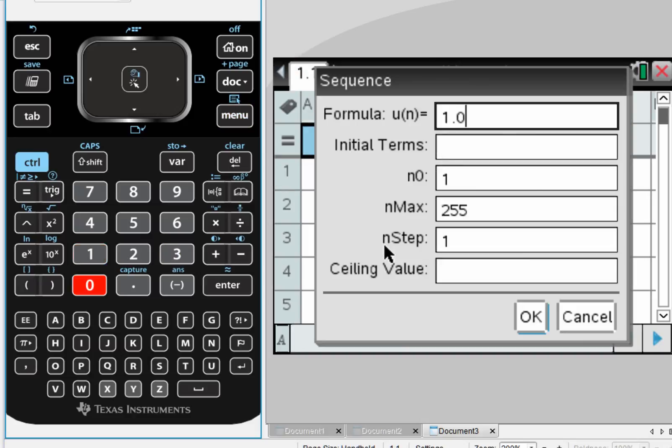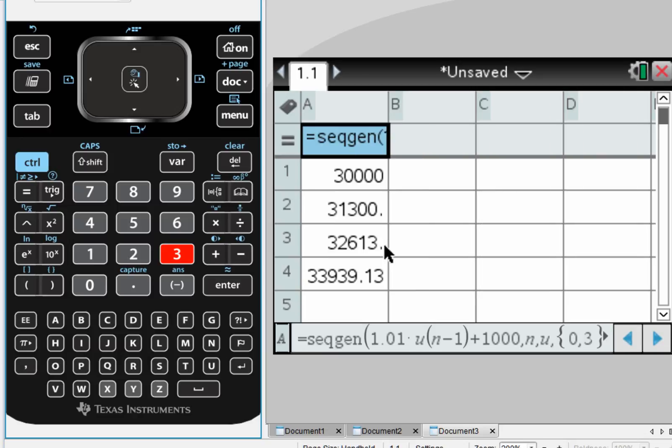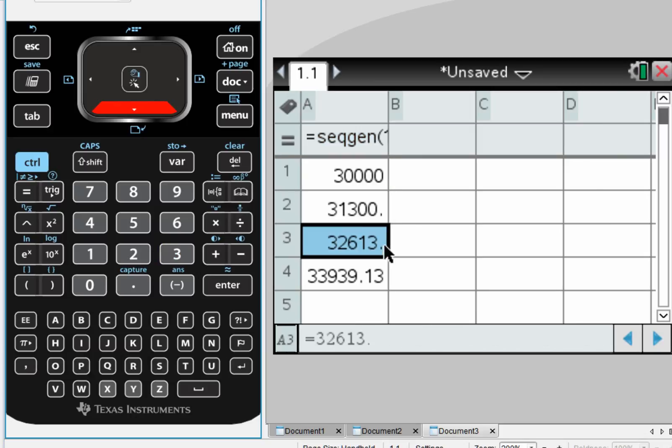We can also confirm this using our sequence generator. The formula, 1.01 times u(n-1) plus 1,000. The initial value was 30,000. We're starting with V0, and I want up to V3 or U3. Enter. And we calculate. And yes, the last value matches what we got. $33,939.13.